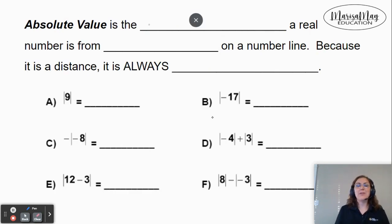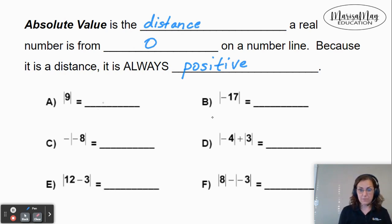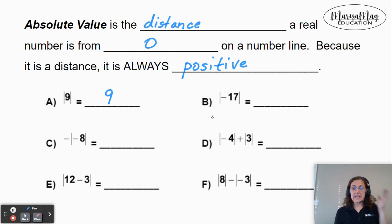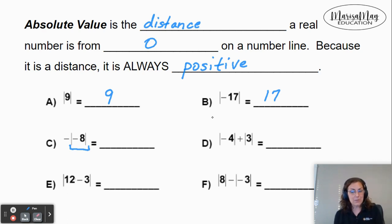Let's talk a little bit about absolute value. Absolute value is the distance a real number is from zero on the number line. Because it's a distance, absolute value is always positive. So for A, the absolute value of 9 — how far is 9 from zero? Nine is 9 from zero on the number line. For B, how far is negative 17 from zero? Negative 17 is 17 away from zero, just in the left direction. Because it's a distance, we make it positive — so 17. C is tricky: the absolute value of negative 8 says how far is negative 8 from zero — it's 8. But then this says to stick a negative on the answer, so we get negative 8 as the final answer.